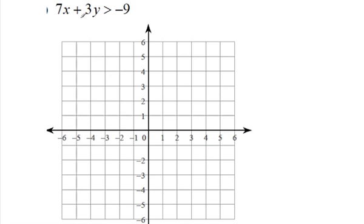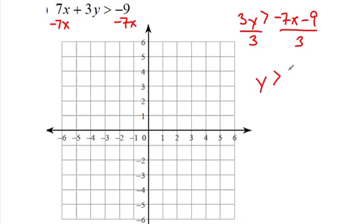First thing we have to do is get this in slope intercept form. So I need to get y by itself. So I'm going to subtract 7x's. We've been doing these a while now. You should be pretty good at solving these for y. 3y is greater than negative 7x minus 9. Divide by 3.